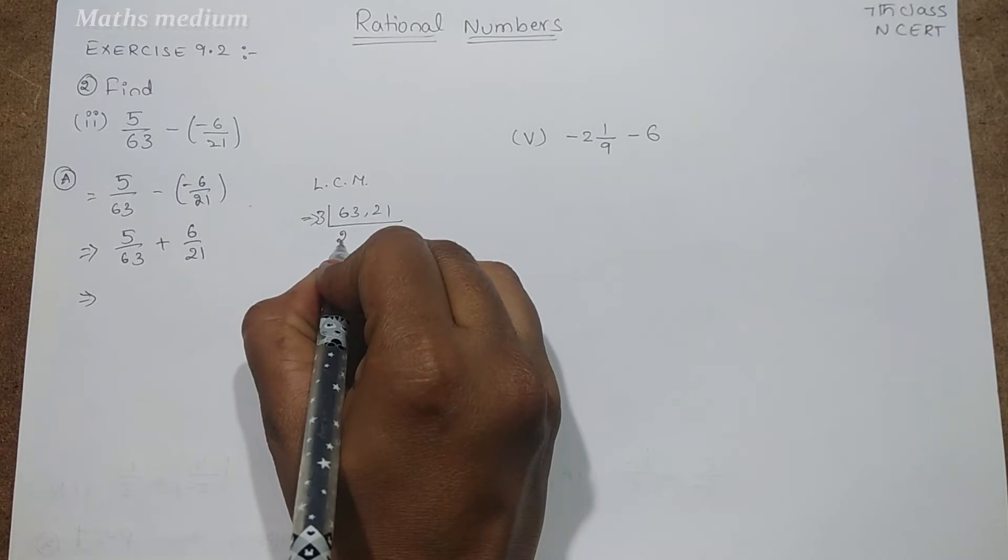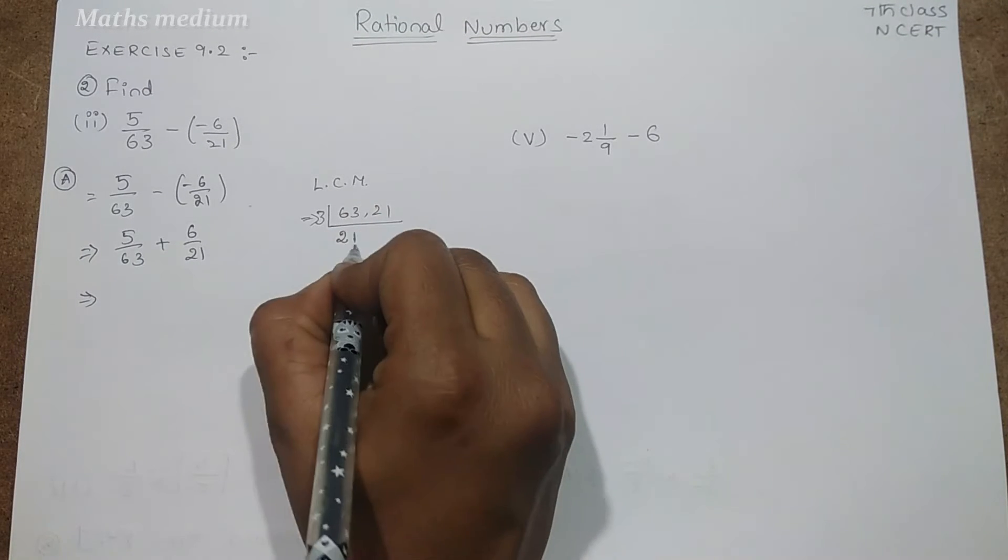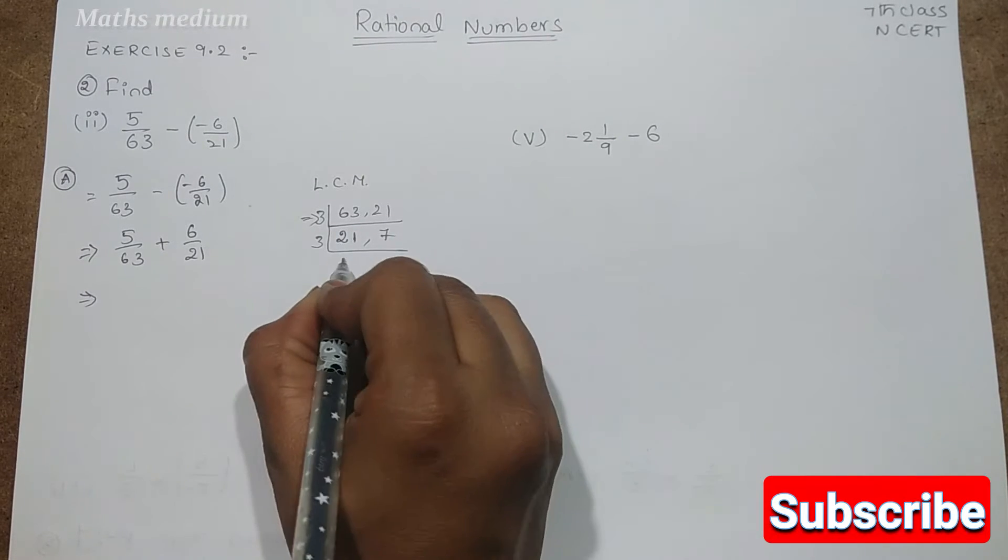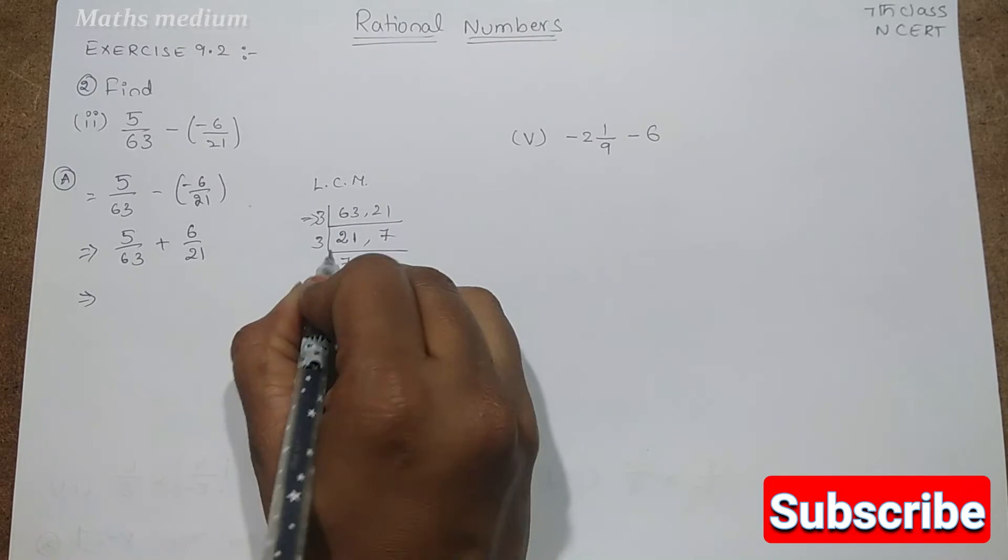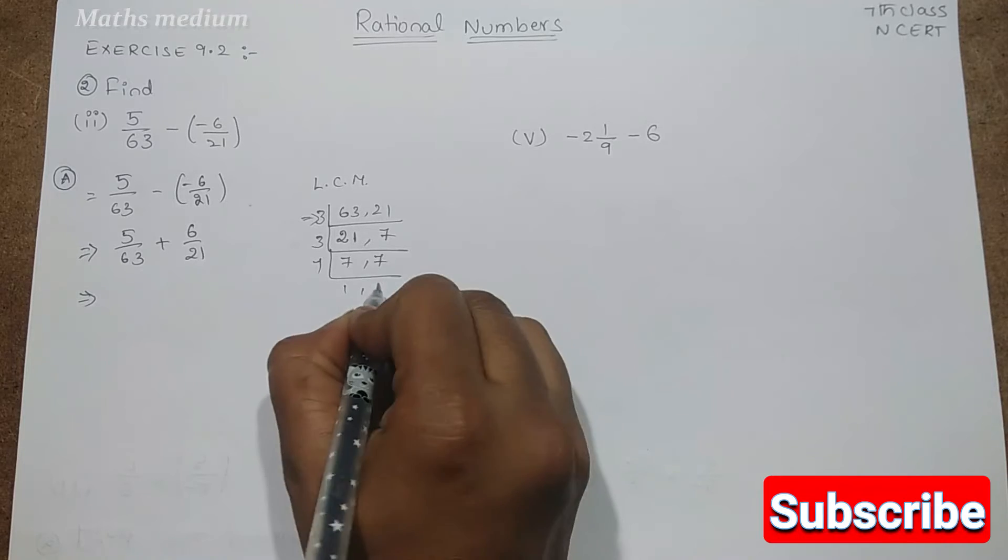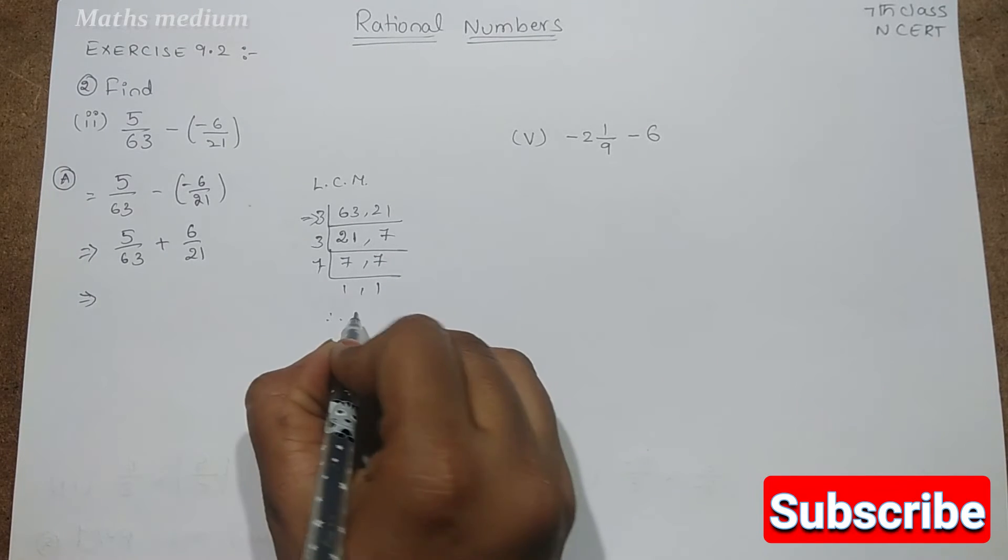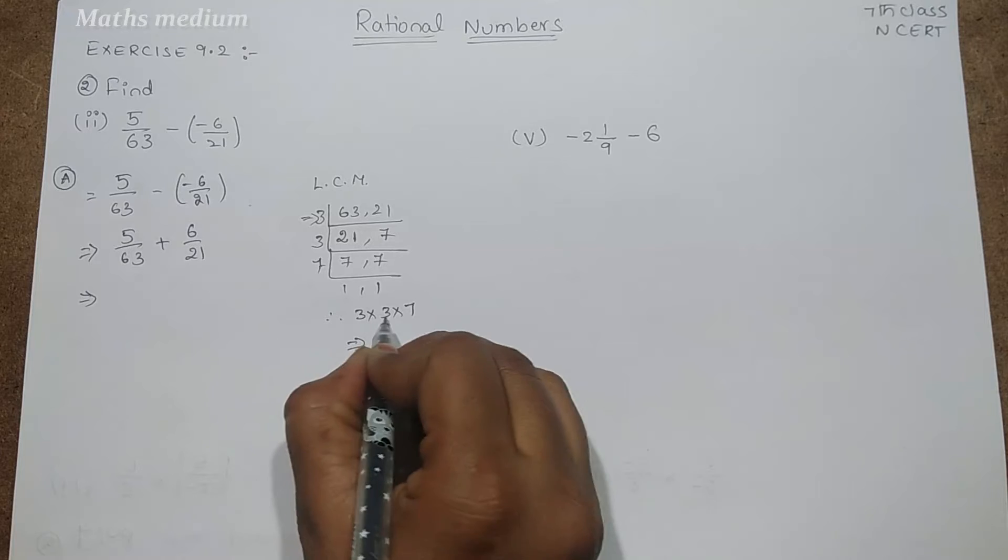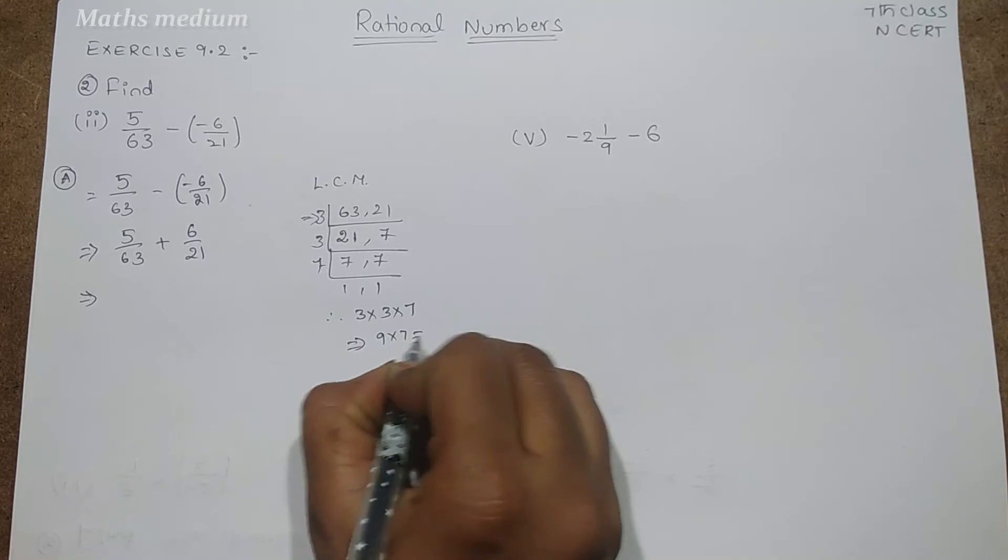Three twos are 6. It means three twenty ones are, three sevens are, again three. Three sevens are 21, again seven. Here seven ones are, seven ones are. So therefore 3 into 3 into 7. Three three is 9 into 7. It gets 63.